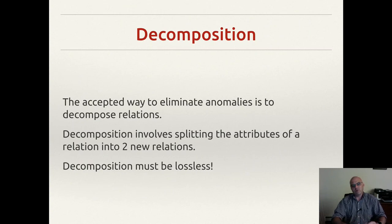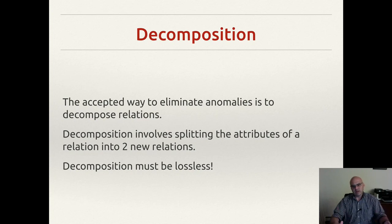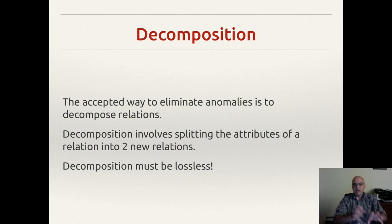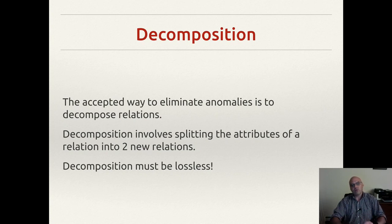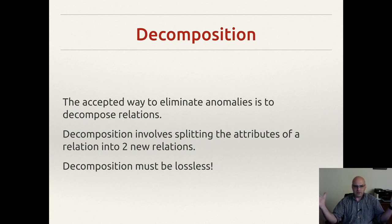So how do we fix it? We fix it with decomposition. Decomposition is the accepted way to eliminate these anomalies. We take the relation and split it into two sets of attributes — two new relations. You might ultimately end up with more than two relations from one, but you always go through the process of decomposition from one relation to two. It's also important to note that this process must be lossless: when done, you have to be able to project back with a natural join and get back to where you were before.